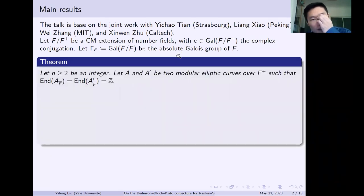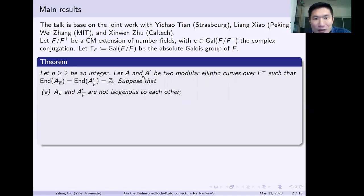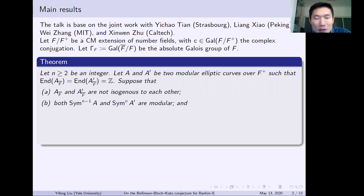Here is our first theorem, which is more elementary to state. Let n be an integer that is at least two, and consider two modular abelian varieties over the totally real field F-plus — A and A-prime — such that they are geometrically simple (no CM multiplication), and some additional conditions. We suppose that first they are not geometrically isogenous to each other.